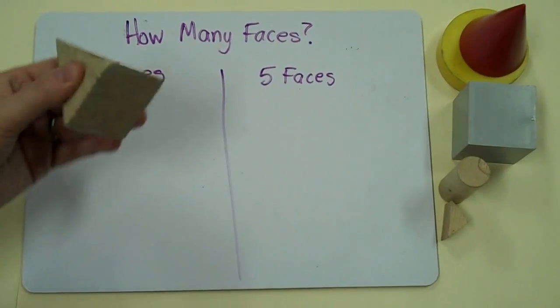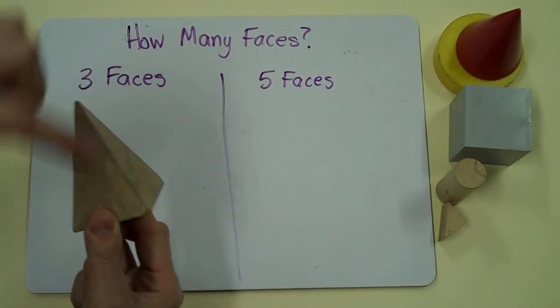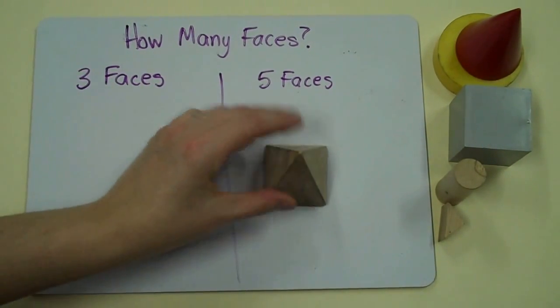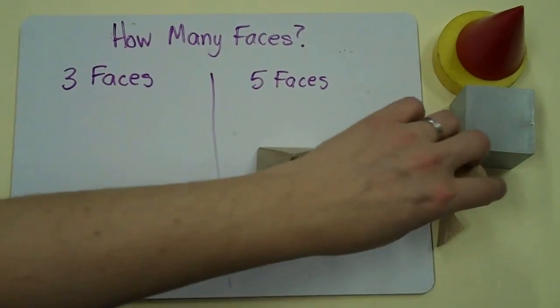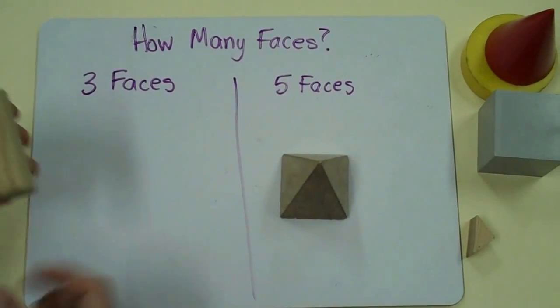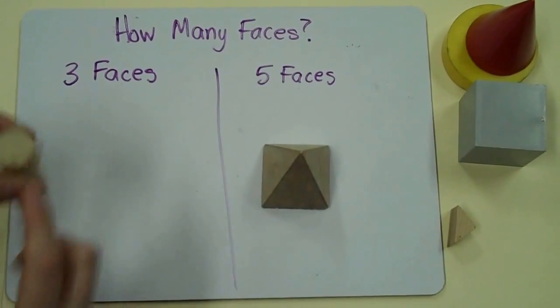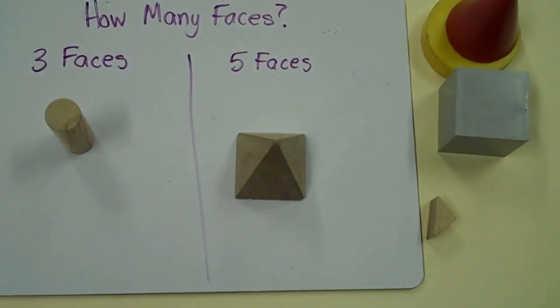A pyramid has one, two, three, four, five faces. It belongs in this group. A cylinder has one, two, three faces. It belongs in this group.